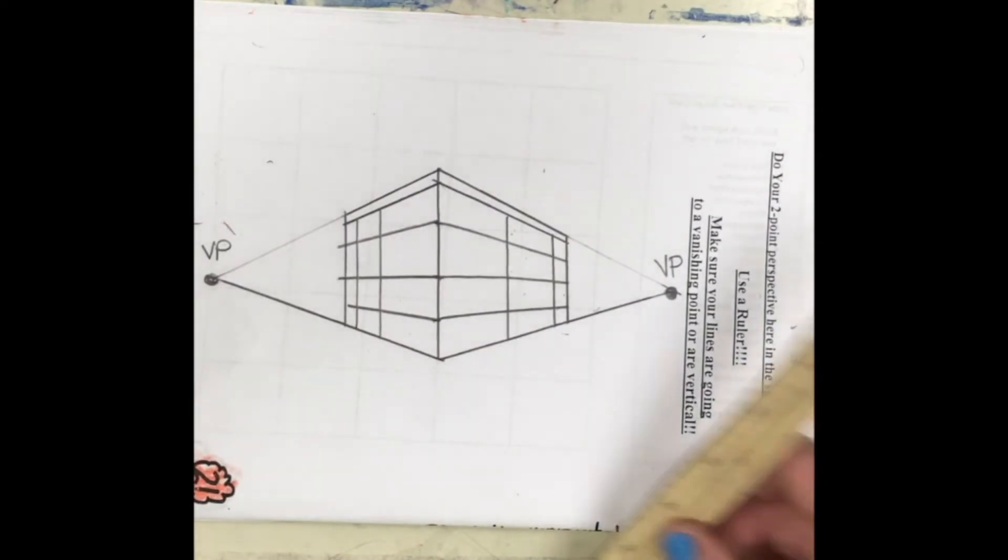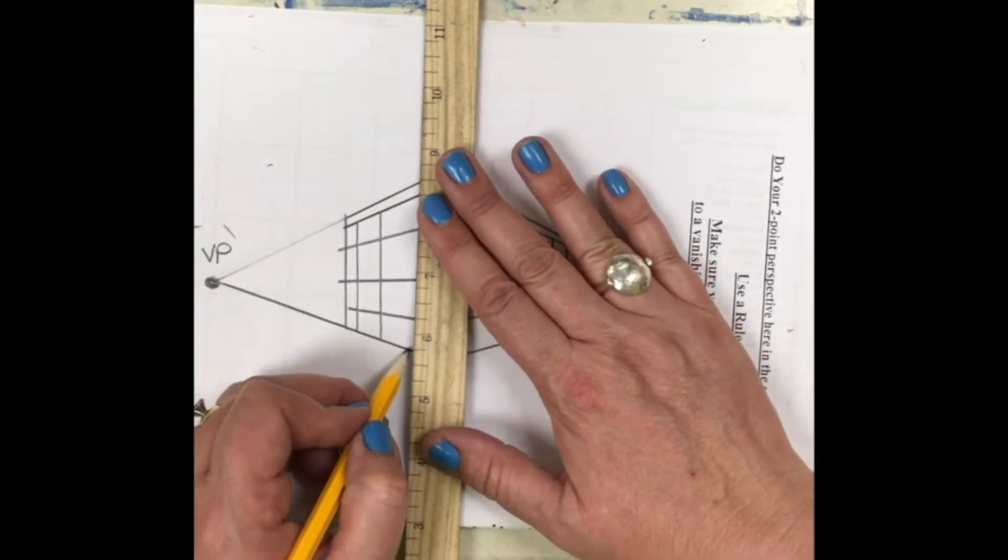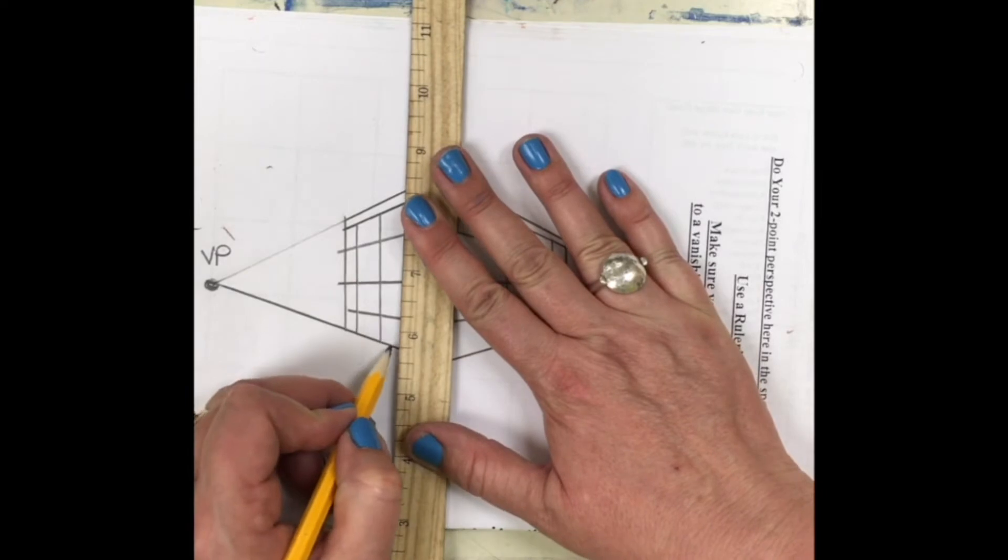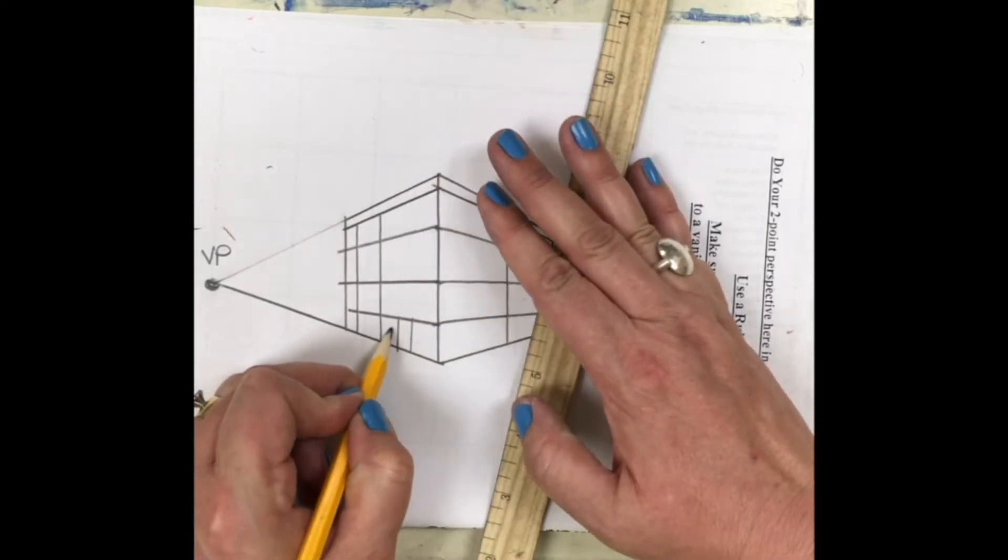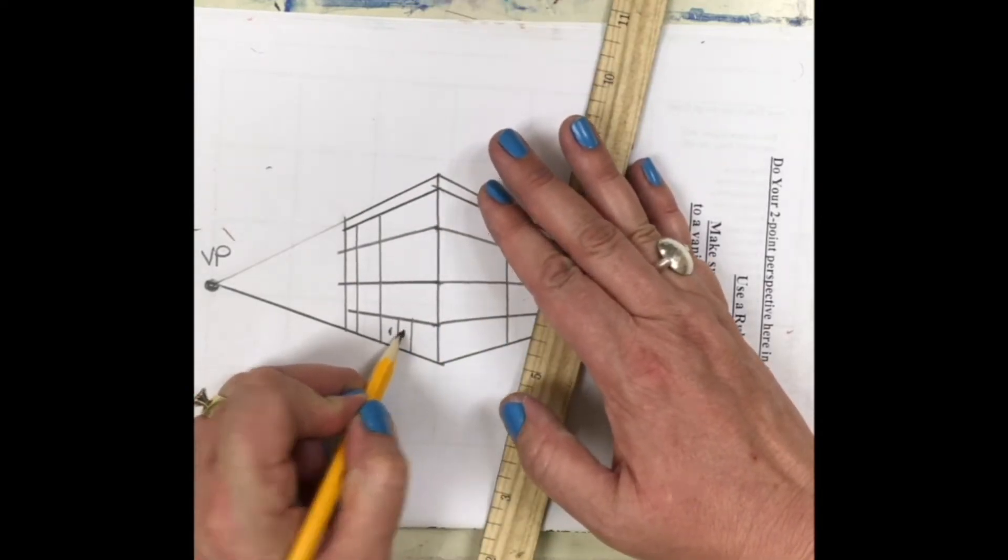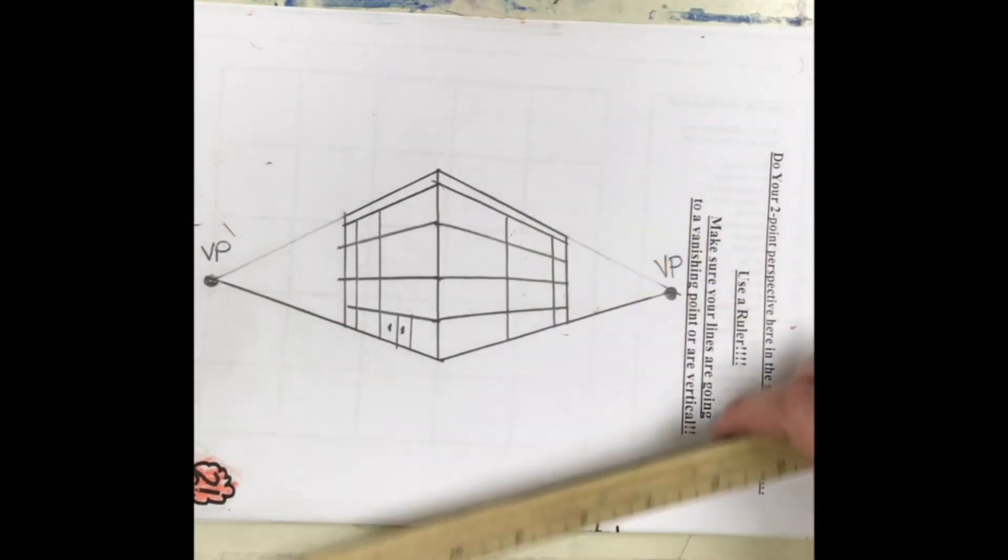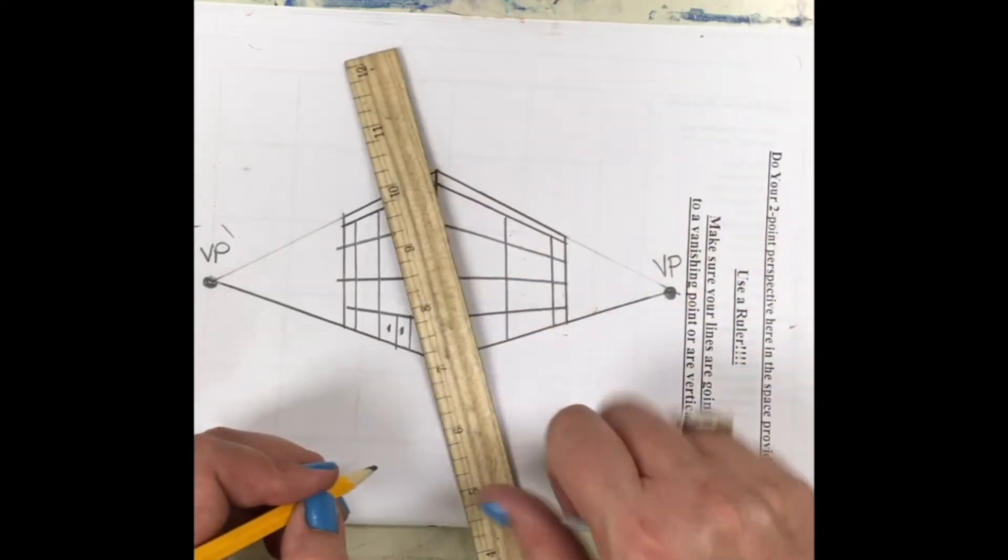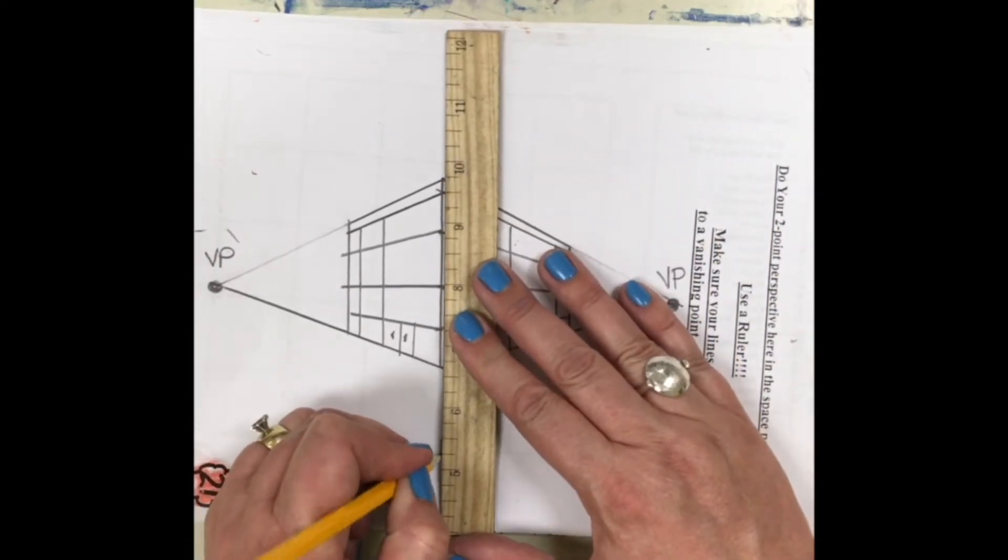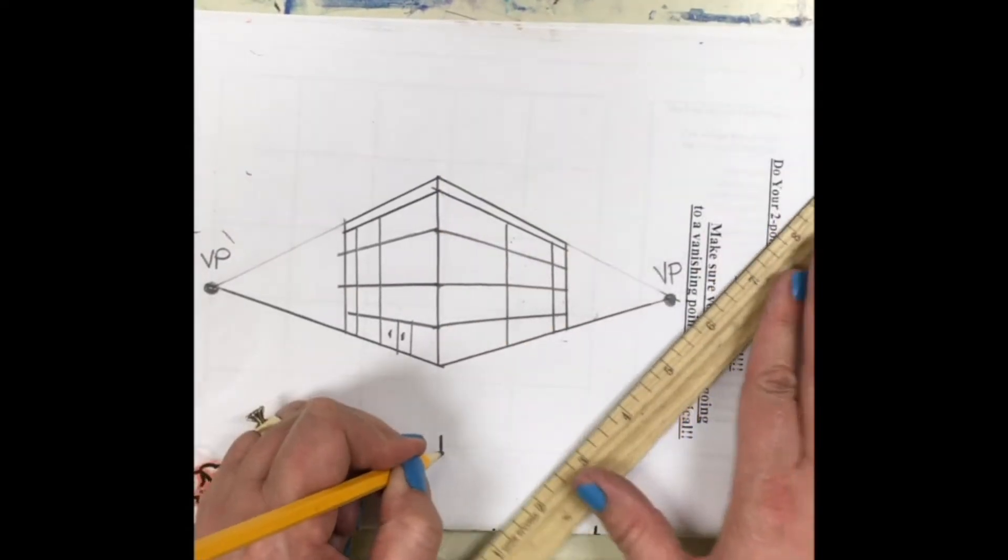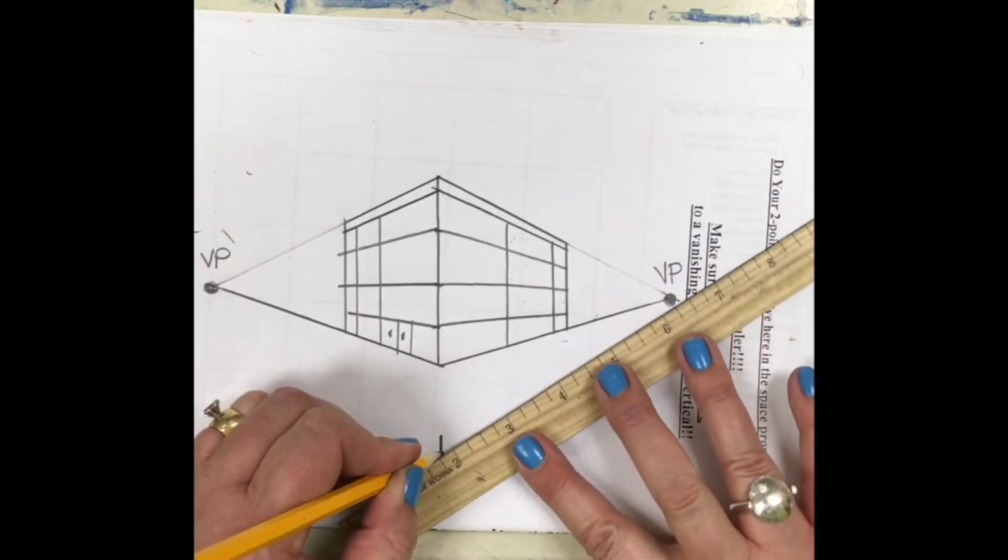Then what you're gonna do is you got to put a door on so the people can get into your building. Okay, so there's my door, got the handles there. Now I want to make a sidewalk. So a sidewalk starts with a little vertical line. That's where the sidewalk corner is.